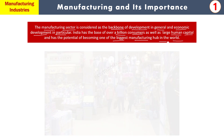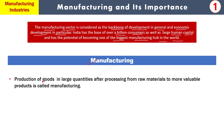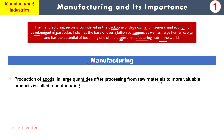Manufacturing को हम define करते हैं: production of goods in large quantities जब raw material को हम process करते हैं। Primary secondary sector और tertiary sector को already study किया हुआ है। जब किसी raw material को process करके product तैयार करते हैं तो उस primary material की value बढ़ जाती है। So, production of goods after processing from raw materials to more valuable products - इसी को manufacturing कहते हैं।